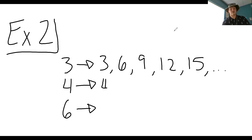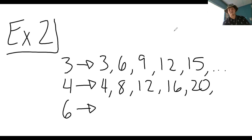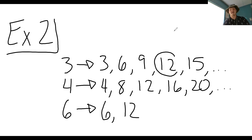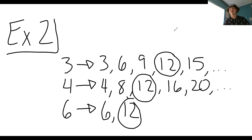For four, we have four, eight, 12, 16, 20, so on and so forth. For six, we have six, 12. I'm going to stop right there because I have said 12 three times — a 12 here, a 12 here, and a 12 here. So the least common multiple for three, four, and six equals 12. LCM equals 12.